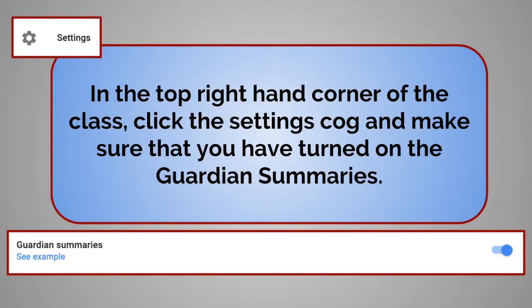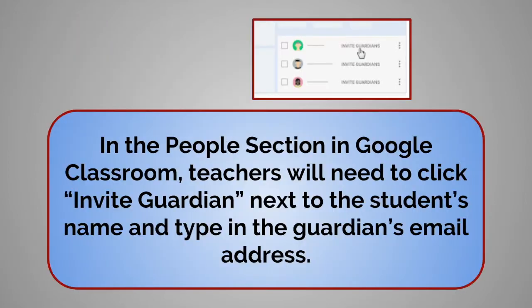On the teacher end, the teacher will need to go to the top right corner in Settings in the class. They will have to make sure that the guardian summaries are turned on. In the People section, teachers will need to click on Invite Guardian next to the student's name and type in the guardian's email address.